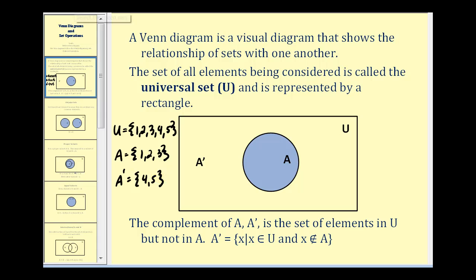So the elements one, two, and three would be inside set A, and the elements four and five would be outside circle A.